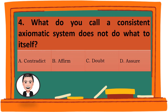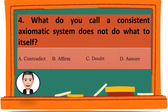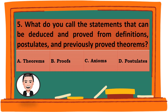Question 4. What do you call the statements that can be deduced and proved from definitions, postulates, and previously proved theorems? A. Theorems. B. Proof. C. Axioms. D. Postulates. The correct answer is C. Axioms.